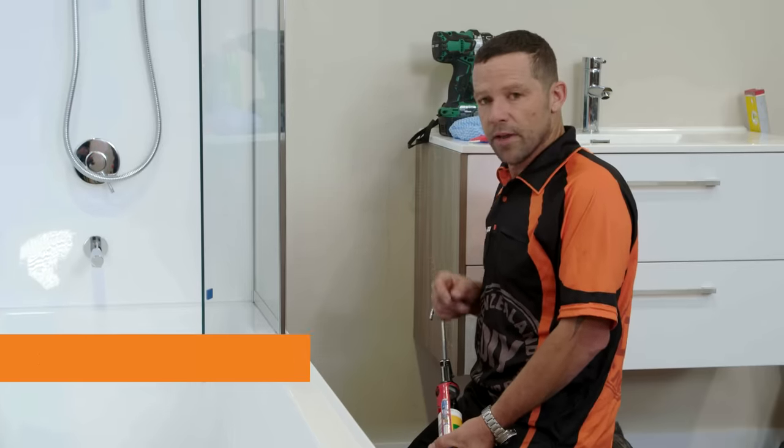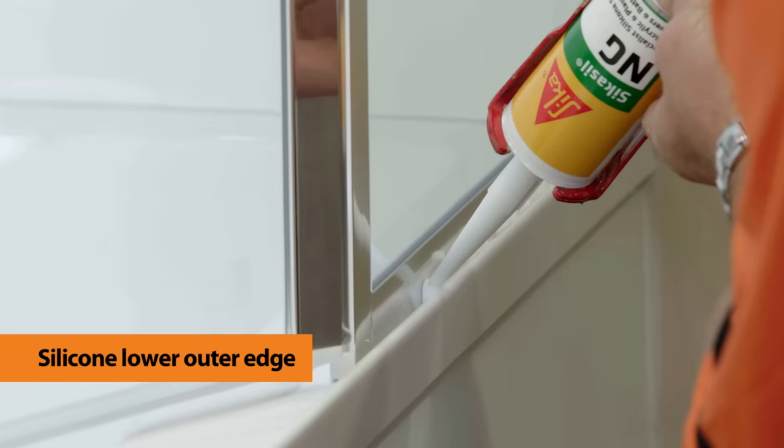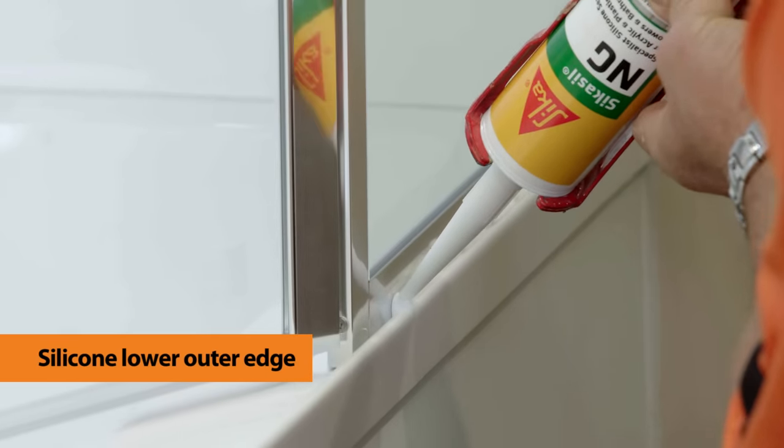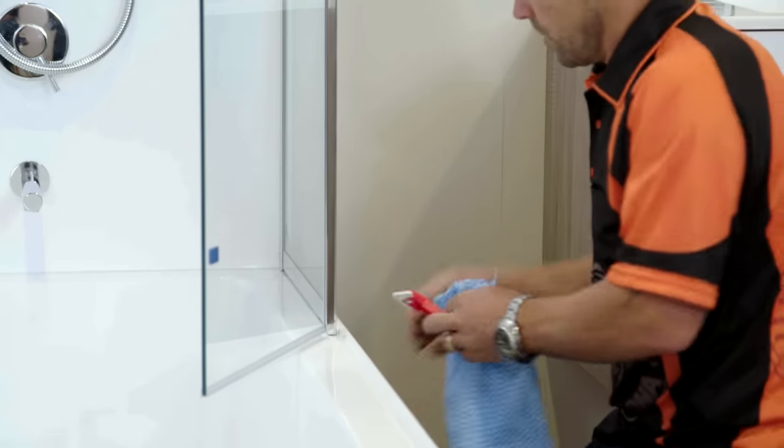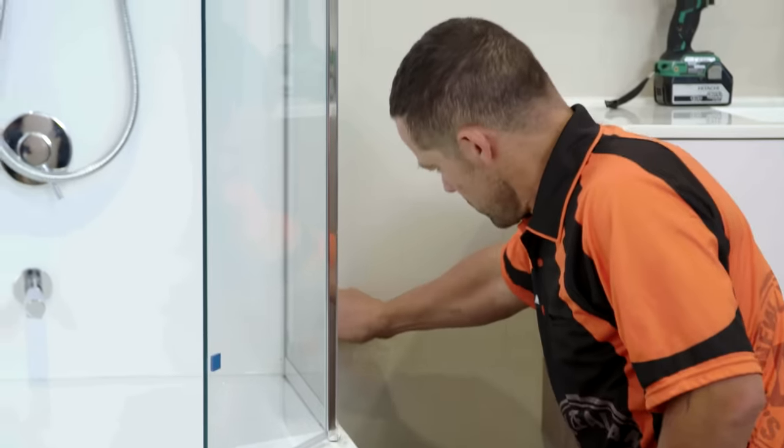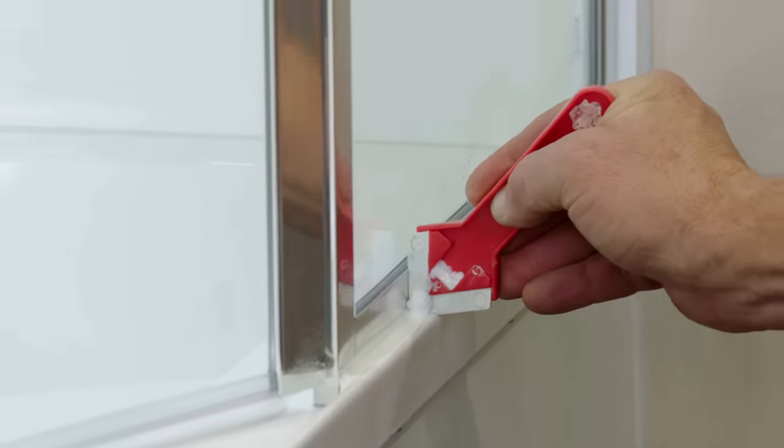So we're just about there. One last thing I have to do is apply a bead of silicon on the outside edge only. And again, spray and wipe excess silicon away using a silicon applicator tool.